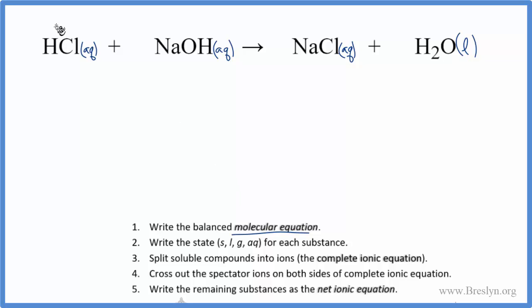Hydrogen group one, that has a one plus charge. Chlorine has a one minus. We have sodium in group one, that has the plus charge, and this OH, that's a hydroxide polyatomic ion, it has a negative charge. Over here sodium has a plus charge, chlorine has a minus, and then water we're not going to worry about charges. It's a covalent compound and it's also a liquid, we're not going to split that up into its ions.